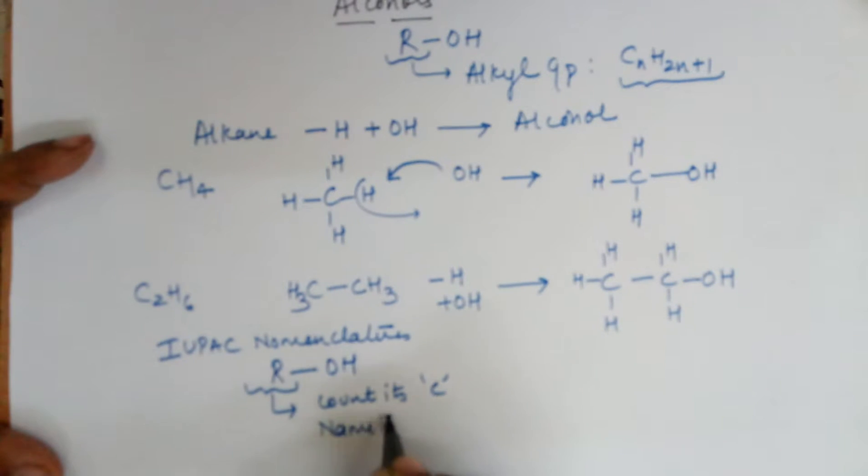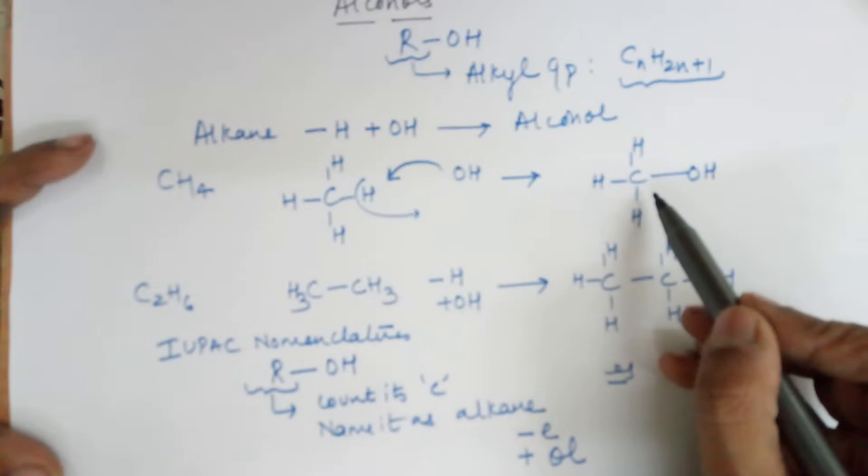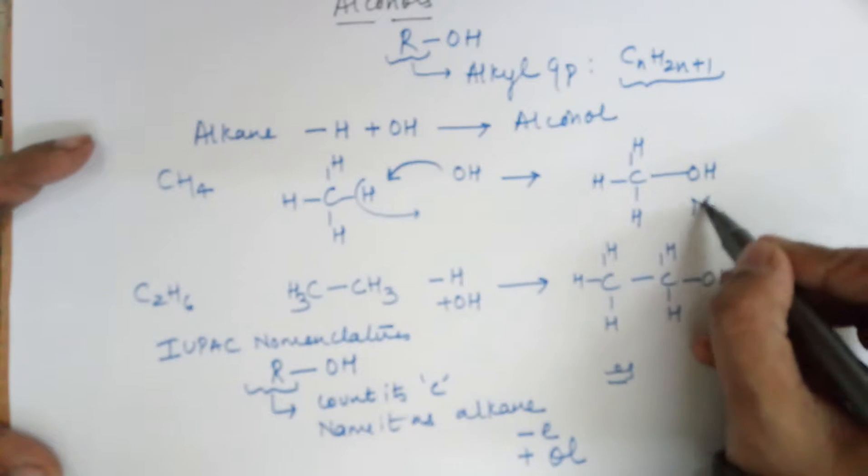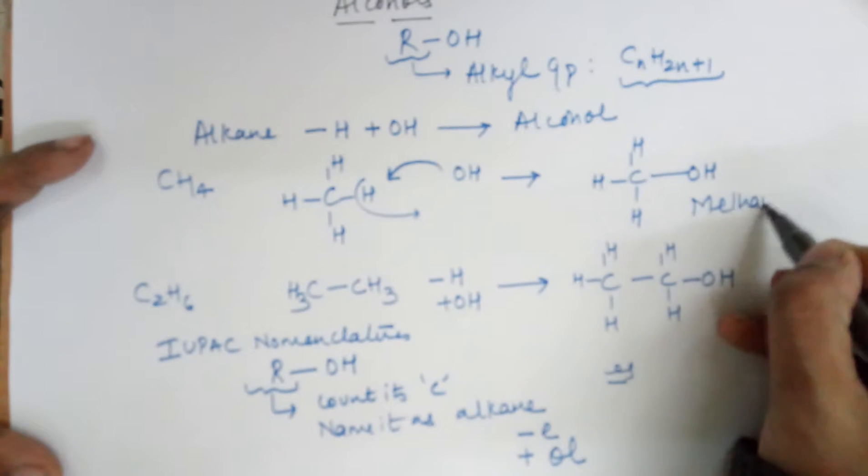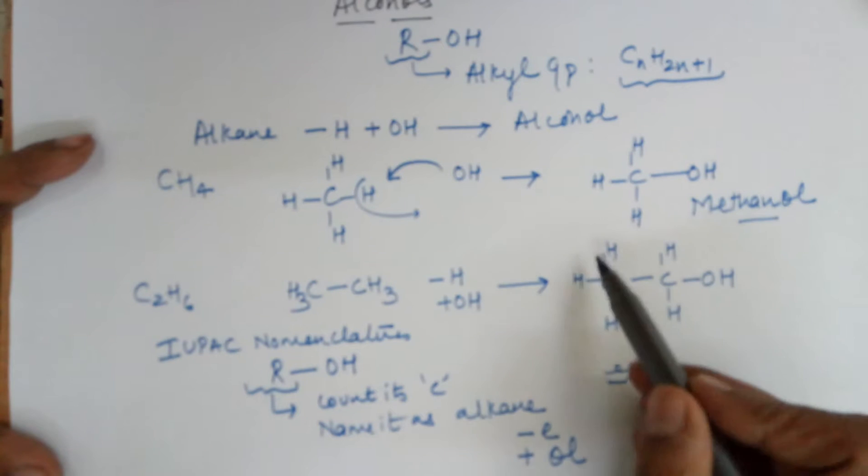I'll give you an example for this. The first example: let's count the carbons. This is one carbon, so the name should be methane. Remove the E, add 'ol', so the name becomes methanol.